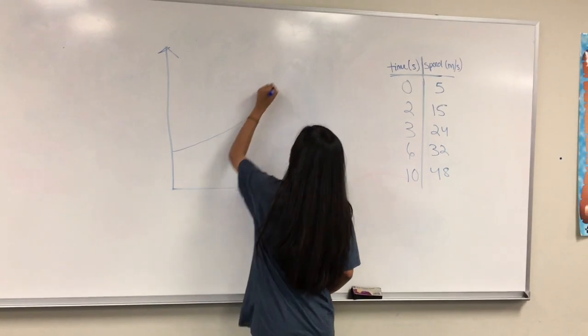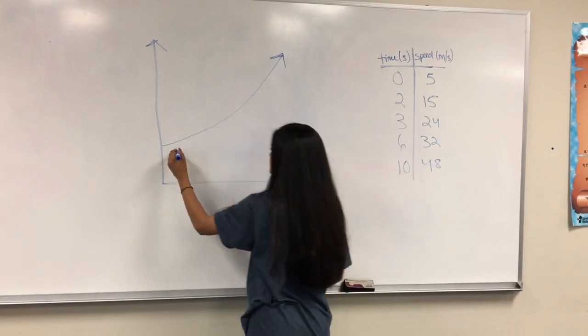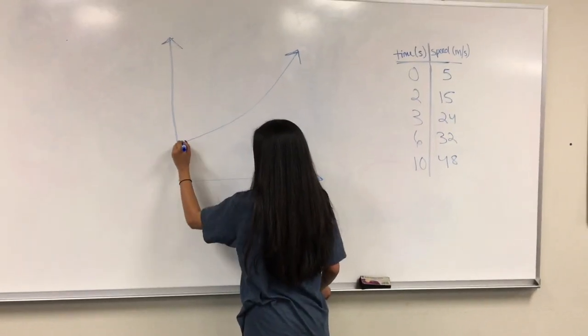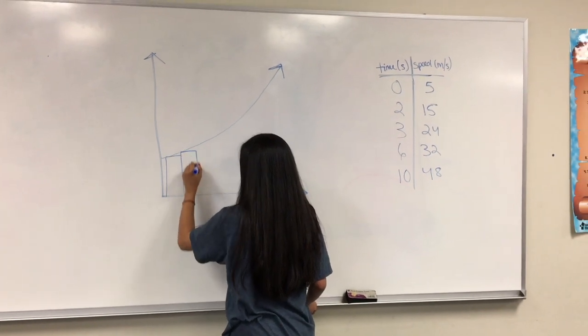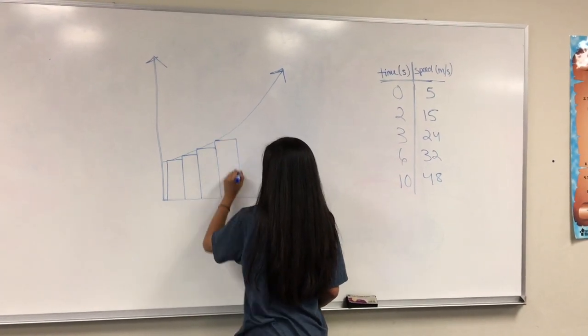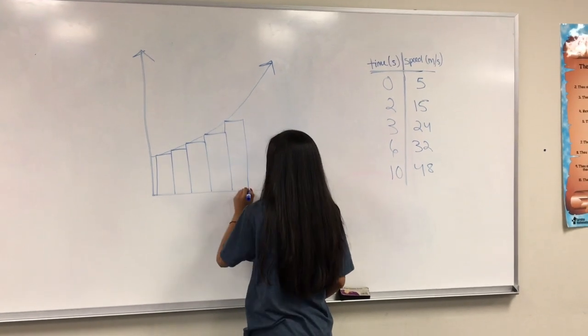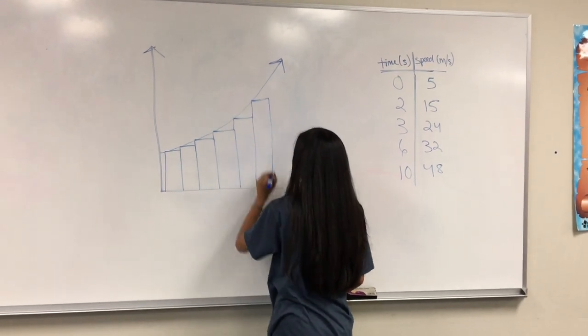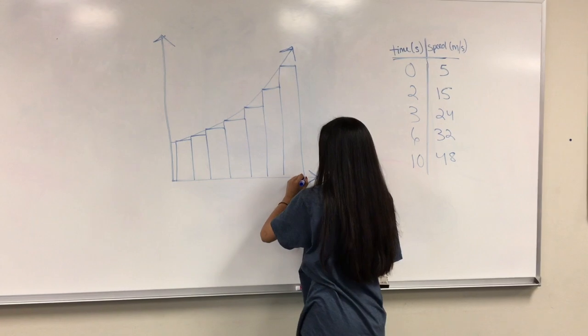To get started, the left Riemann sum, or LRAM, uses a series of rectangles where the top left corner of the rectangles touch the function. For this approximation method, you would only use the x values of the rectangles that touch the function, which will only be the left sides of each rectangle, hence the term left Riemann sum.